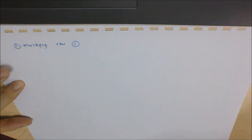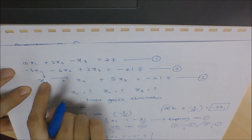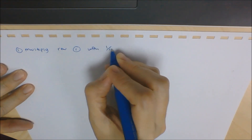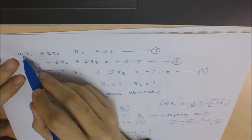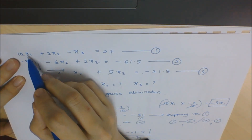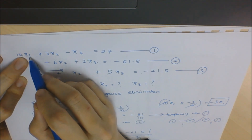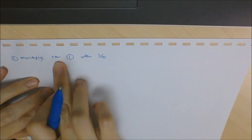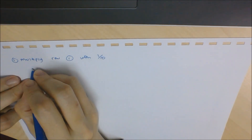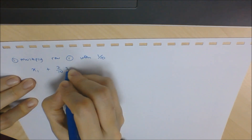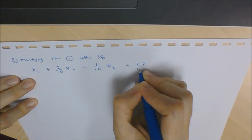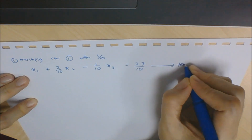To eliminate the first element in row 3, multiply row 1 by 1/10. Why 1/10? Because you need to transform 10x1 into x1 — you divide by 10. And if you divide one term by 10, you must divide the entire row by 10. So you multiply row 1 by 1/10 to get the temporary row 1: x1 + (2/10)x2 - (1/10)x3 = 27/10.